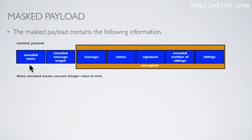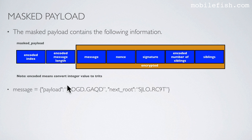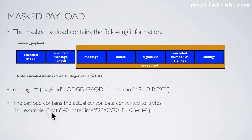The mask payload contains the following information: the encoded index and the encoded message length. Encoded means the integer values are converted to trites. The message consists of the next root and the message itself, the nonce, the signature, the encoded number of siblings, and the siblings. The message consists of the sensor data itself converted to trites and the next root. Here is an example of sensor data.